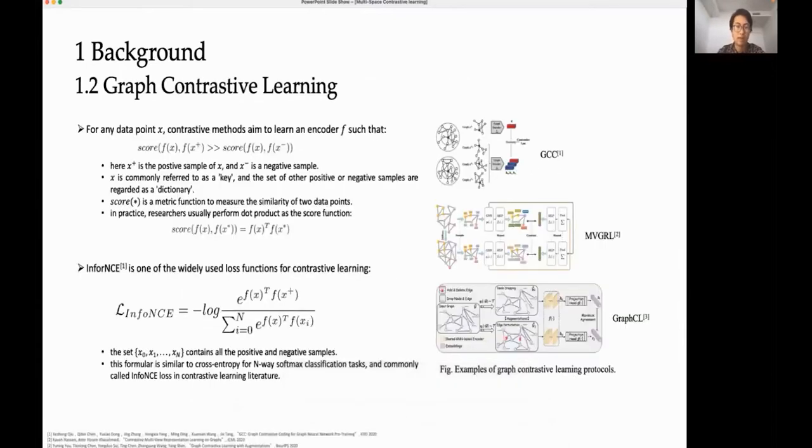For any data point X, contrastive learning methods aim to learn an encoder such that X is similar to positive samples and different from negative samples. As the formula shows, X plus represents the positive sample and X minus denotes the negative sample. The score function is a metric that measures the similarity between samples, which will be determined according to specific scenarios. In this case, data point X is commonly referred to as an anchor point.